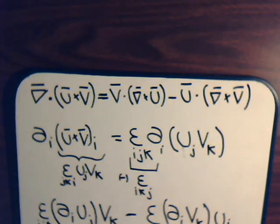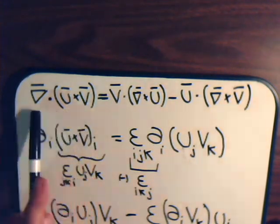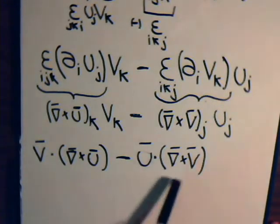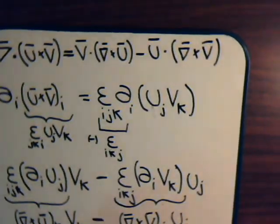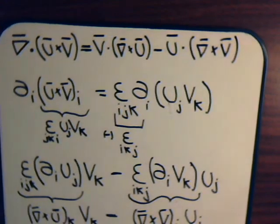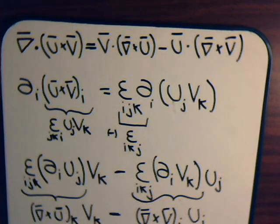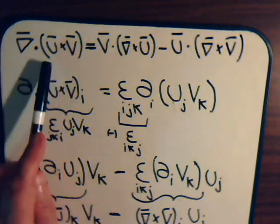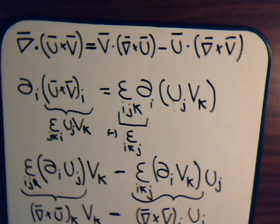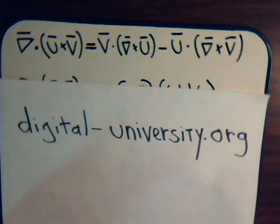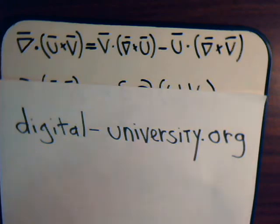So what we have shown is that the divergence of u cross v equals v dot del cross u minus u dot del cross v, which is exactly the identity written at the top. That's the proof. We just demonstrated how the divergence of a cross product can be written out like this. The playlist for all the videos is at digital-university.org.